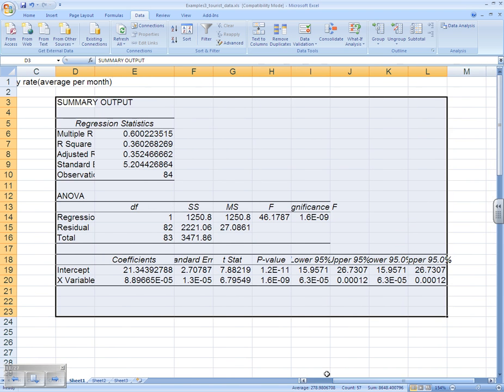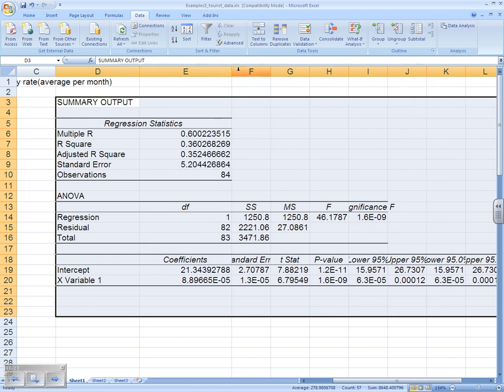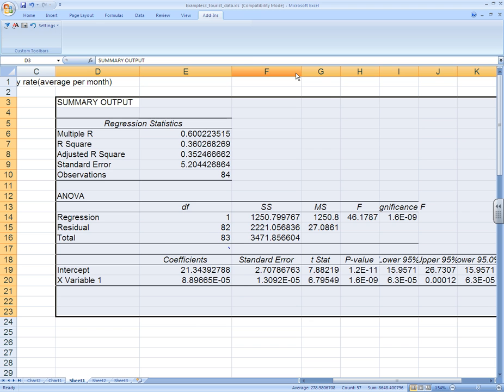Our summary output from Excel. Our regression statistics at the top left, and our coefficients to find the equation of the line of best fit through the points at the bottom left. Intercept and X variable 1. The intercept and the slope are beta 0 and beta 1. Y is beta 0 plus beta 1 times X.